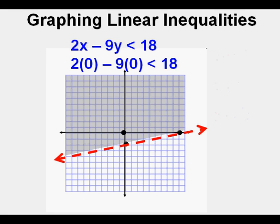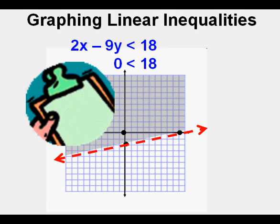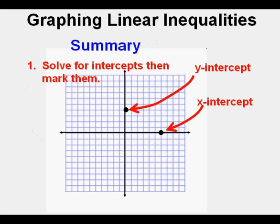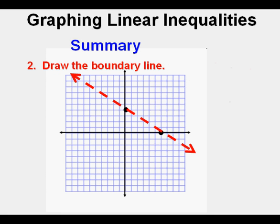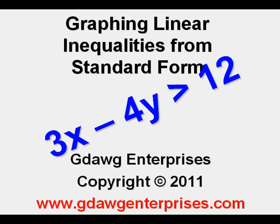All that remains is to check we shaded correctly. Using 0, 0 again, we replace x and y with 0, giving 2 times 0 minus 9 times 0. Is 0 less than 18? Yes. And since 0, 0 is in the shaded area of the graph, we know we have shaded correctly. Check. To summarize: find x and y intercepts by covering the y and x terms respectively. Mark the intercepts, then draw the boundary line — dashed for not equal to (less than or greater than), solid for equal to. Shade above for greater than, below for less than. Finally, use a point like 0, 0 to verify the correct area was shaded.